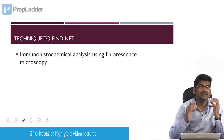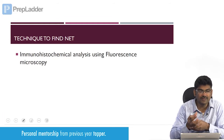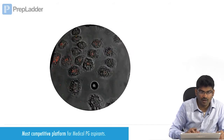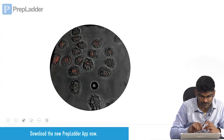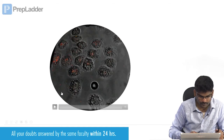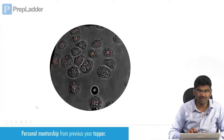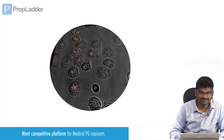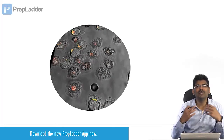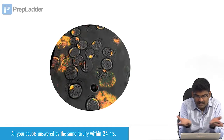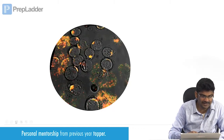We can detect NETosis by immunohistochemical analysis using fluorescence microscopy. This short video beautifully depicts the process — you can see the decondensation occurring, and then the extracellular trap is formed.